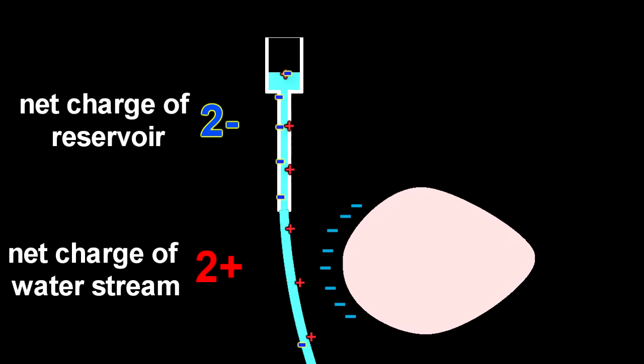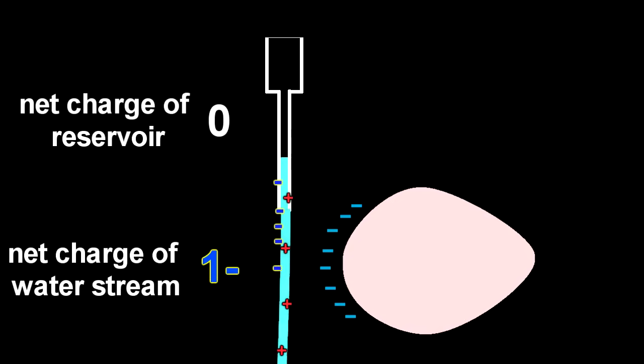Which means that the rest of the water must carry a net negative charge. So what you should see, if Veritasium is right, is the first water that comes out should be attracted to the actual negatively charged balloon. Then it should become neutral, and then last of all, the water should be strongly repelled from the balloon that it was initially attracted to.